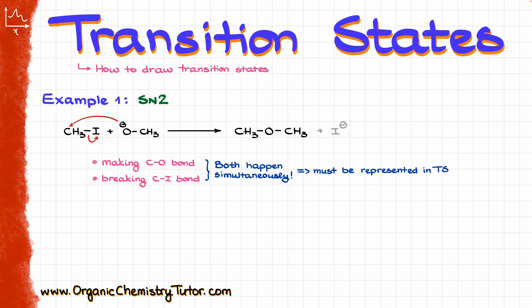To draw my transition state, I'm going to start by showing my carbon atom, and then I'm going to show this long carbon-oxygen bond as a dashed bond, because we are in the process of making that bond — it's not quite there yet. Likewise, I'm going to represent the bond between the carbon and iodine as a long dashed line as well, because I'm in the process of breaking that bond. And of course, my carbon still has those hydrogens, so I'm going to show those as well.